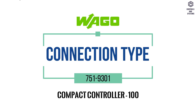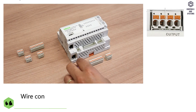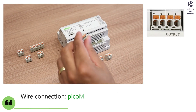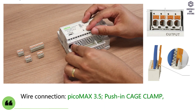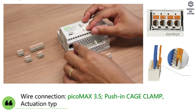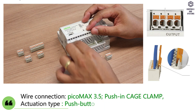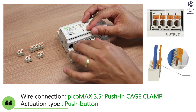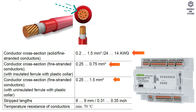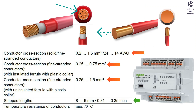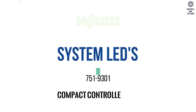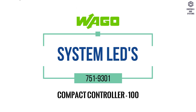Connection type: Wire connection is PECO MAX 3.5 push-in cage clamp. Actuation type is push button. Conductor cross section, stripped lengths, and temperature resistance of conductor specifications are shown in the table.